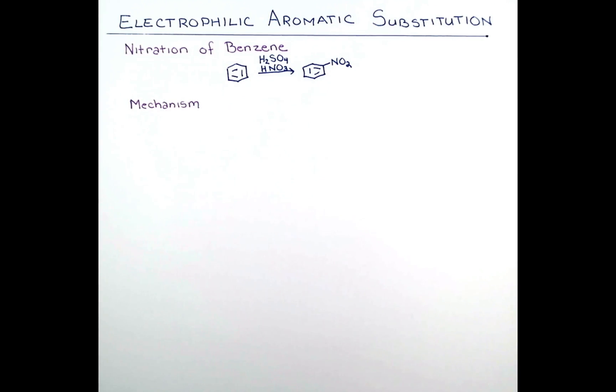The mechanism begins with nitric and sulfuric acid reacting to form the nitronium ion. In the first step, the stronger acid protonates the weaker acid. But wait a second, nitric and sulfuric acid are both strong acids, so how can we tell which is stronger?